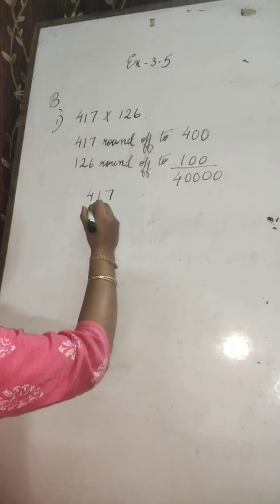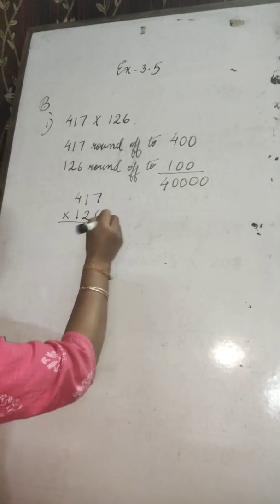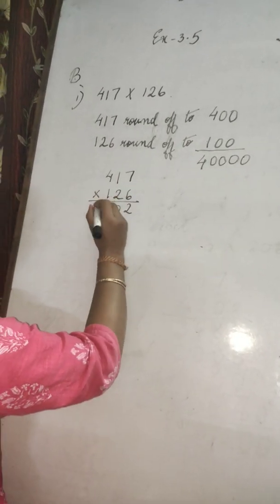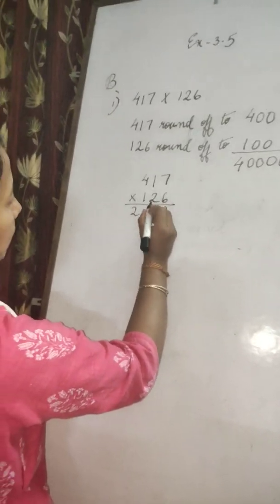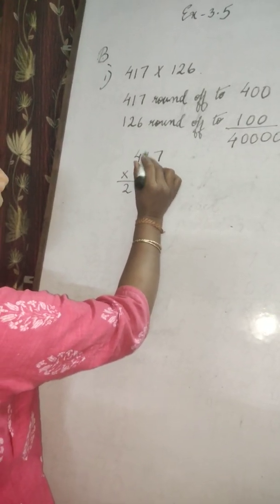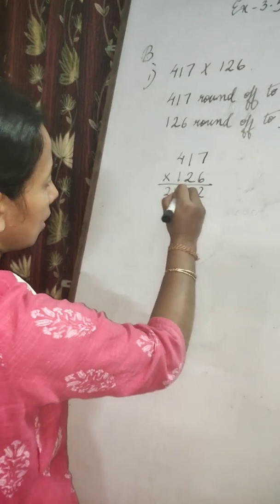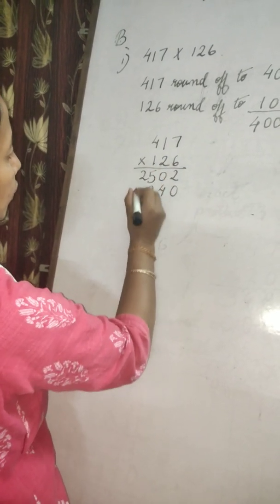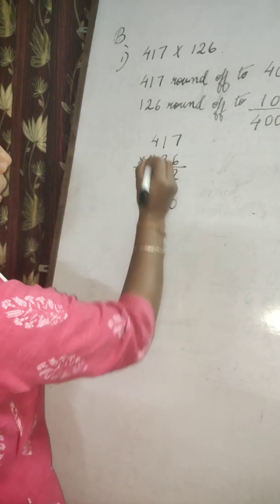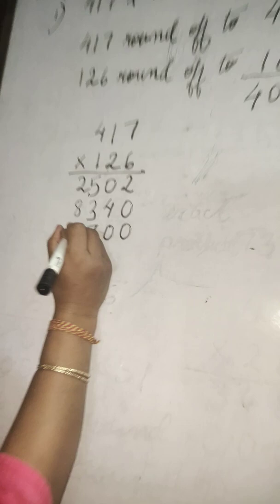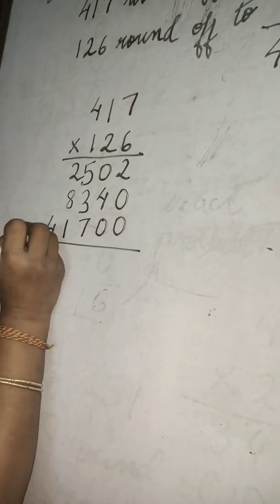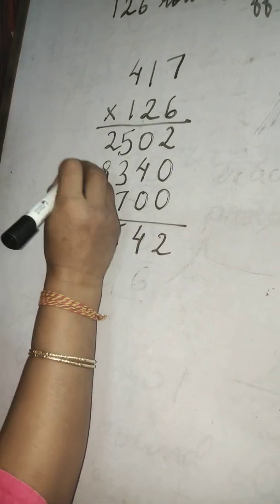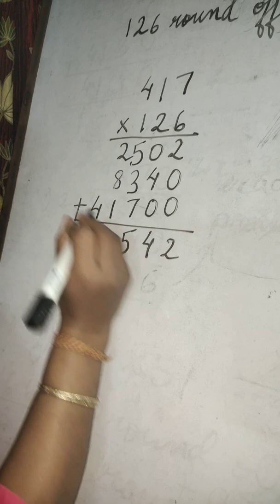Now find the exact product. Multiply 417 by 126. 6 times 7 is 42 — write 2, carry 4. 6 times 1 is 6 plus 4 is 10 — write 0, carry 1. 6 times 4 is 24 plus 1 is 25 — write 5, carry 1. Leave the first place: 2 times 7 is 14, carry 1. 2 times 1 is 2 plus 1 is 3. 2 times 4 is 8. Now multiply with the third digit — leave 2 places: 1 times 7 is 7, 1 times 1 is 1, 1 times 4 is 4. Now add: 2, then 7 plus 3 is 10 plus 5 is 15, carry 1. 9, 10 plus 2 is 12, carry 1. 5. This is the exact product.